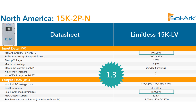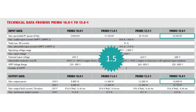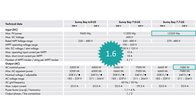Most inverters can manage a DC to AC ratio of 1.2 to 1.8, with some reaching as high as 2.5. Here are some example inverters that range from 1.3 to 1.6.